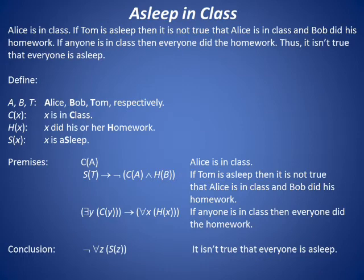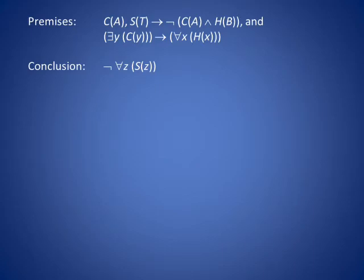The conclusion we seek is the negation of for all z, s of z — that is, it isn't true that everyone is asleep. Once again, symbolically, the premises are c of a; s of t implies the negation of c of a and h of b; and there exists a y such that c of y implies for all x, h of x. The conclusion is the negation of for all z, s of z. So how would we construct a proof of this?